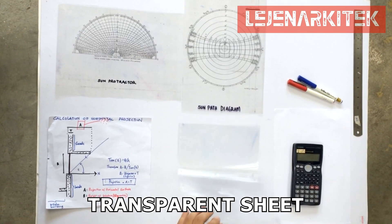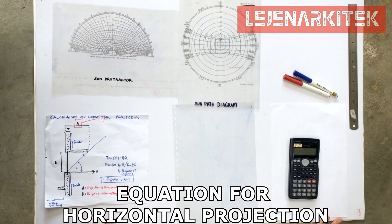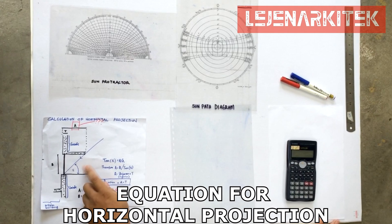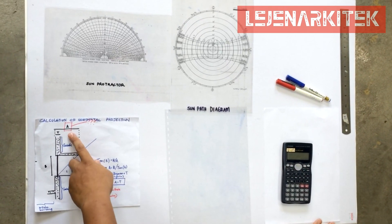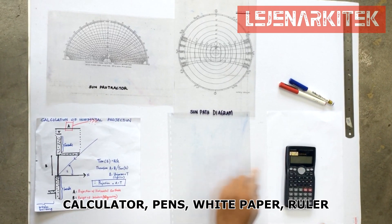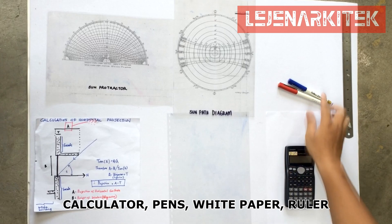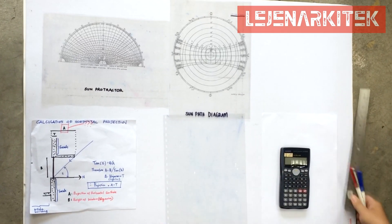And then next you will need to have a transparent paper for you to draw your building on later. And then of course you need to have the equation for the horizontal projection, and A is what we're going to find later on. Don't forget some other tools such as calculators, pen, white papers, and also roulette. Okay, we're going to start our lesson.